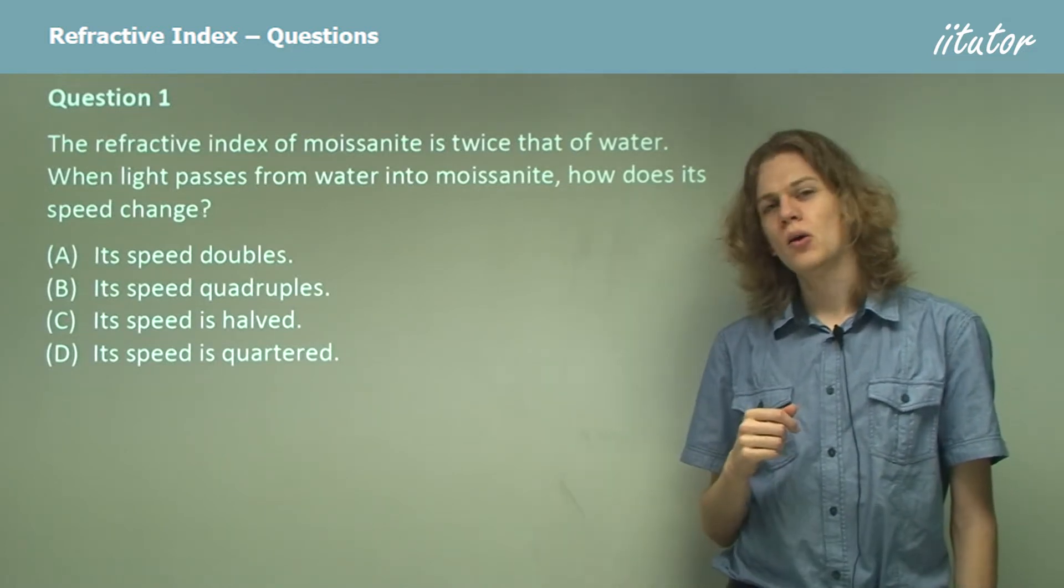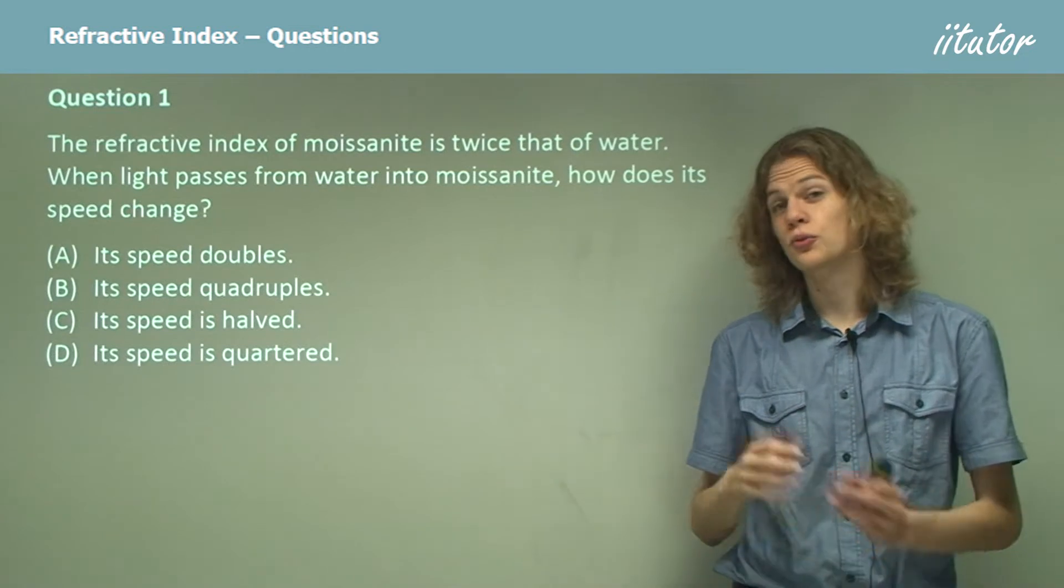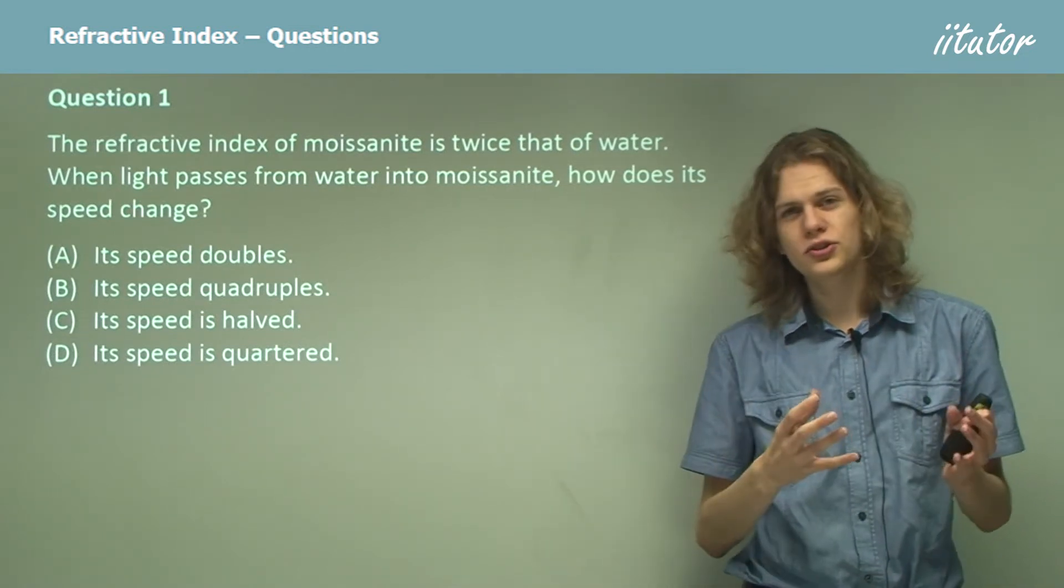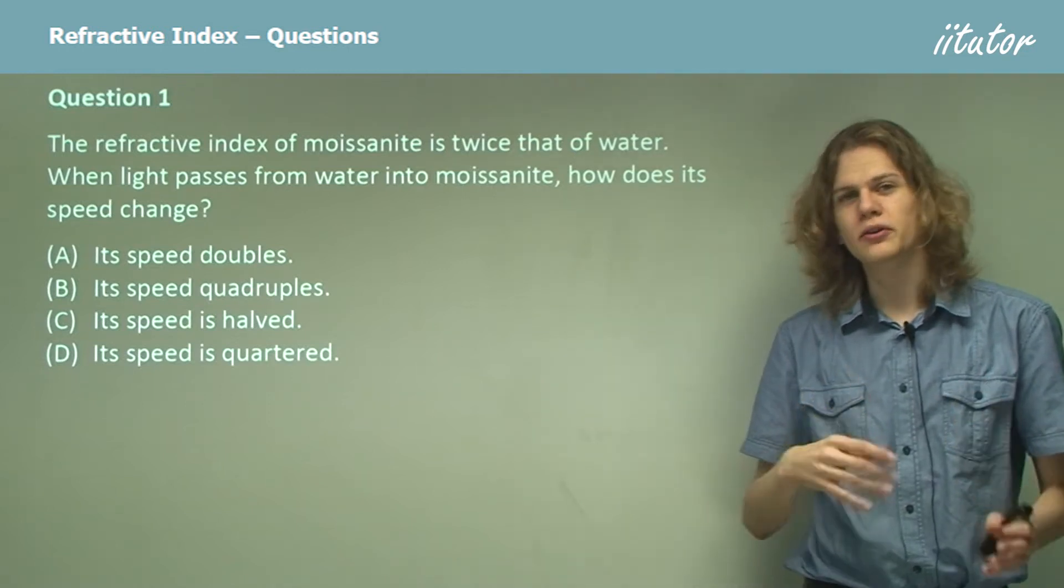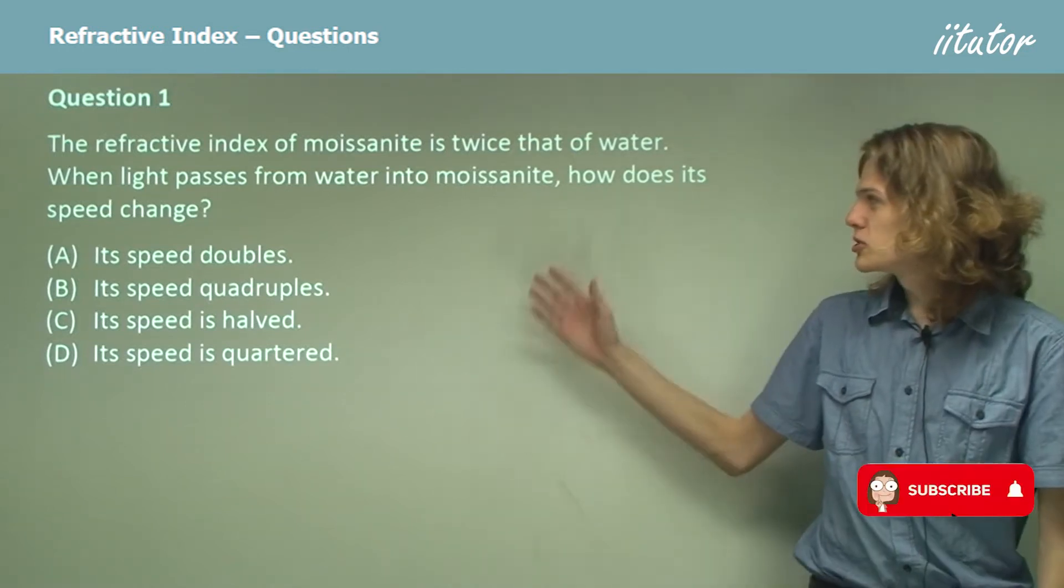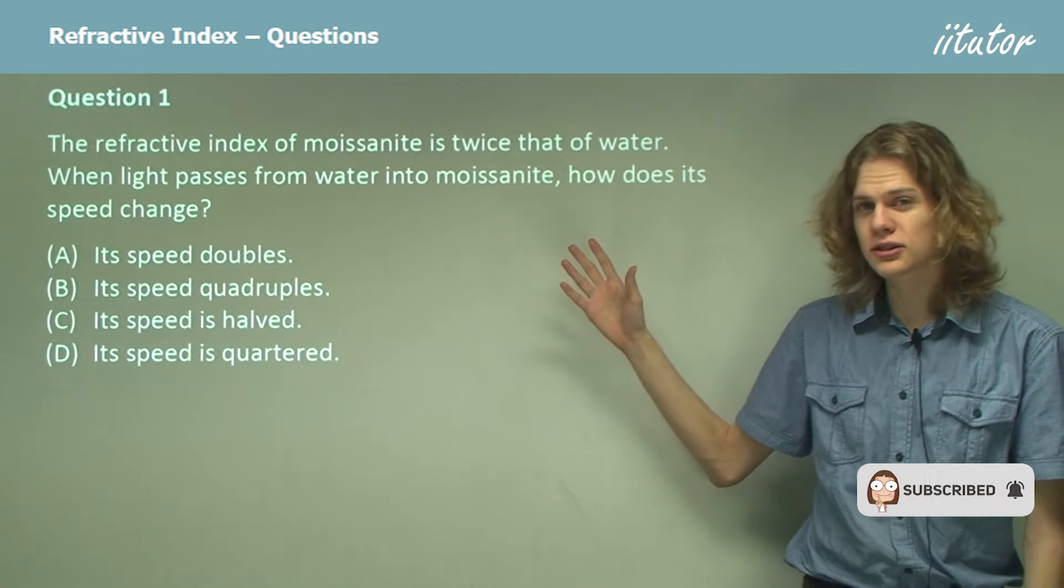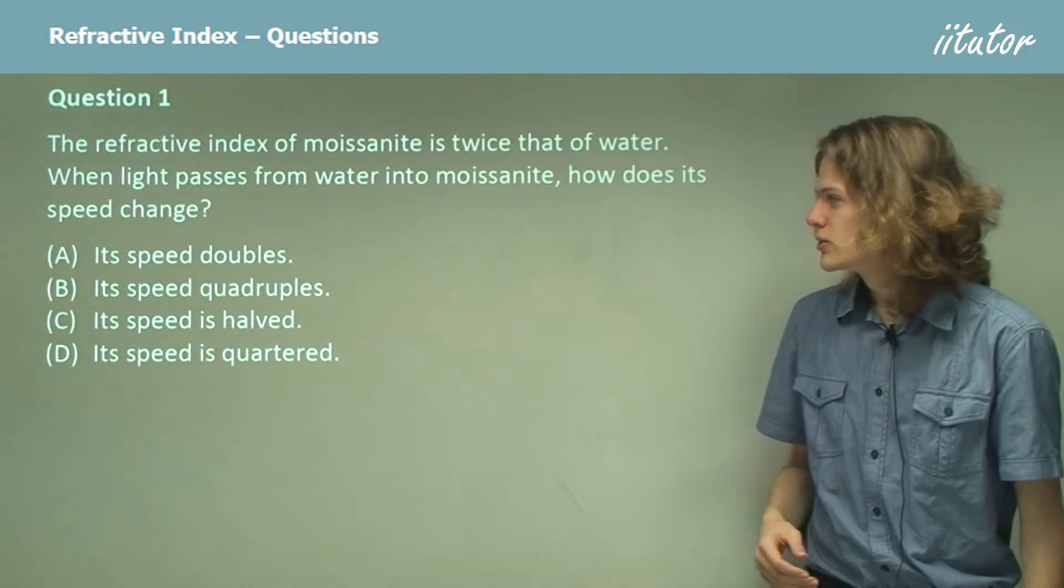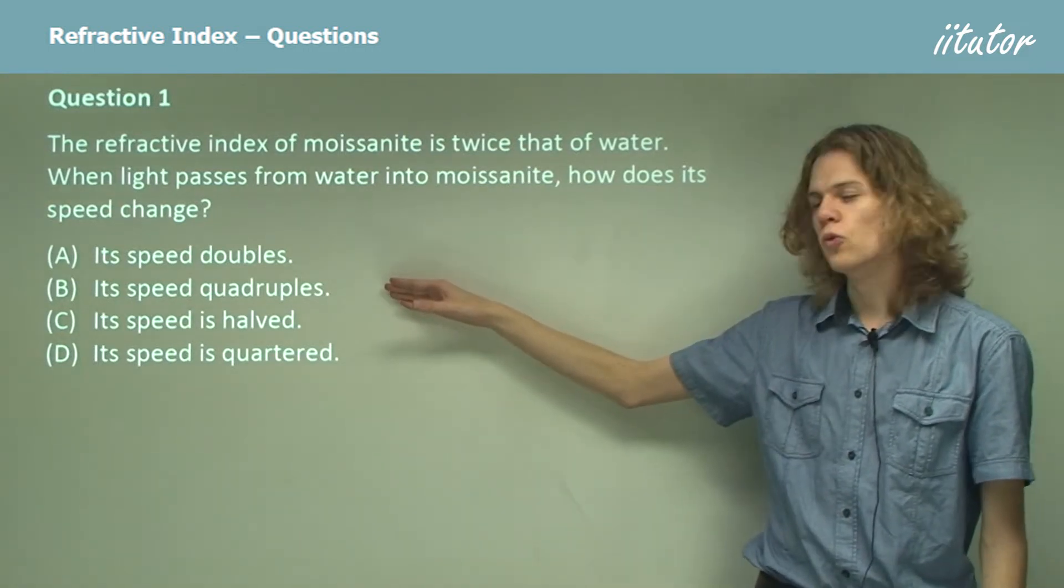Can you remember our equation relating the speed of light to the refractive index? You might remember that as the refractive index increases, the speed of light through the material decreases. So if moissanite has a higher refractive index, then that means the speed of light through moissanite must be lower than in water. So its speed certainly won't double or quadruple.